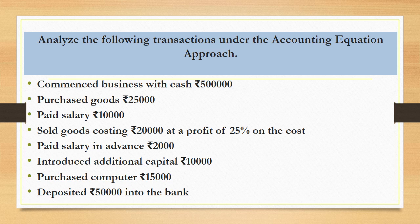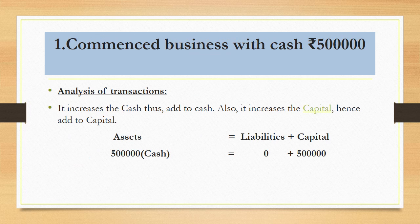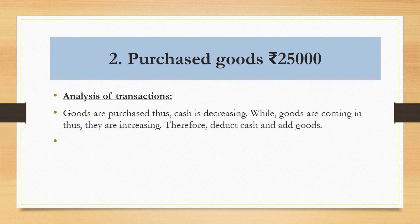Let's start. The first transaction says businessman commences business with cash — businessman ne business mein cash lagaya. When a businessman introduces cash in business, it increases his capital and cash both. Cash is part of assets and capital is part of the liability side, so both sides will be equal. On the asset side we add rupees 5 lakh as cash, and on the liability side we add rupees 5 lakh as capital.